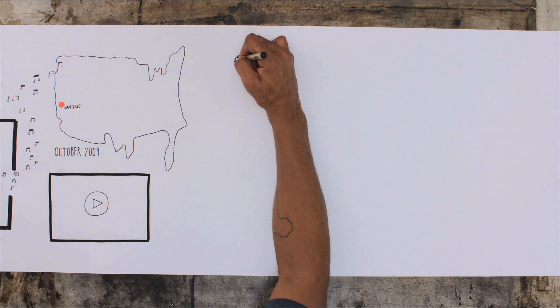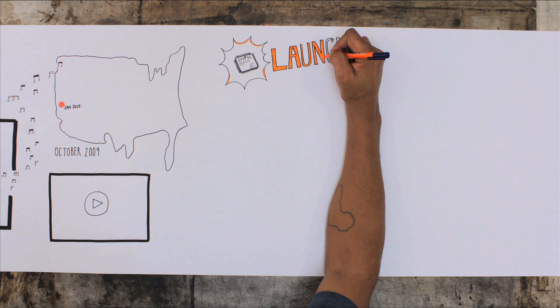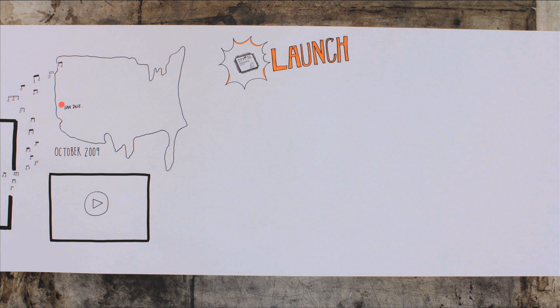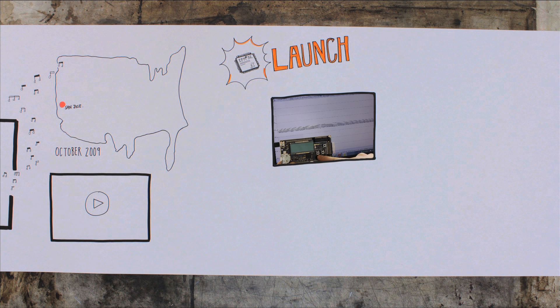With that first product launch, Energy Micro was out of stealth mode. For the very first time, engineers had microcontrollers with 32-bit performance that used a quarter of the energy of existing solutions. We provided software and hardware tools too with Simplicity Studio, enabling engineers to debug system energy consumption in real time—another industry first.